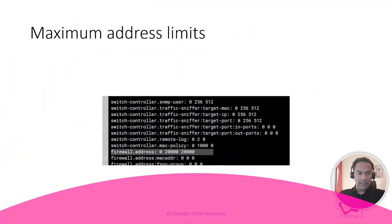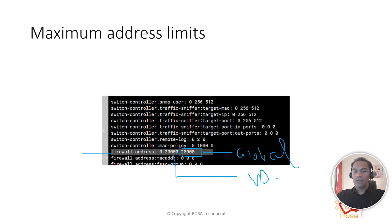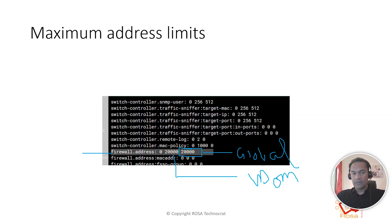Going further, you can see 'firewall address' — the maximum firewall address objects you can configure on a FortiGate is 20,000. This applies either globally or within a VDOM; the total cannot exceed 20,000, whether it's on a single VDOM or across 10 VDOMs.